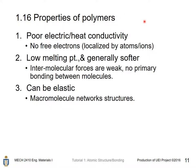Properties of polymers: they have very poor electrical and thermal conductivity as there are no free electrons and electrons are localized by atoms. They have very low melting points and are generally softer because inter-molecular forces are weak with no primary bonds between molecules. They can also be very elastic due to the network structures of the macromolecules.